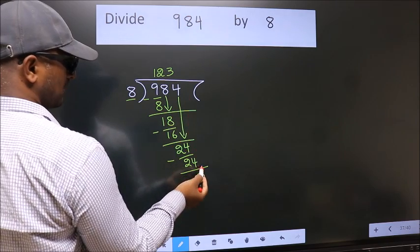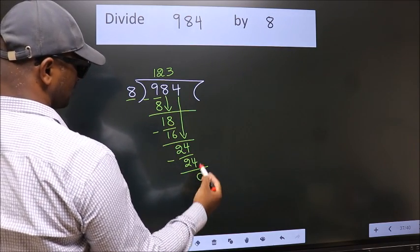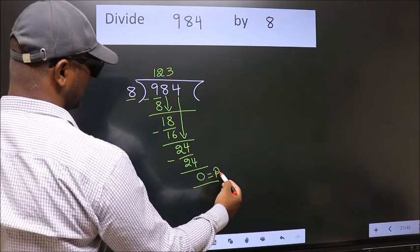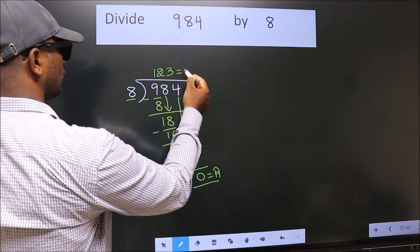No more numbers to bring it down. So, we stop here. This is our remainder. This is our quotient.